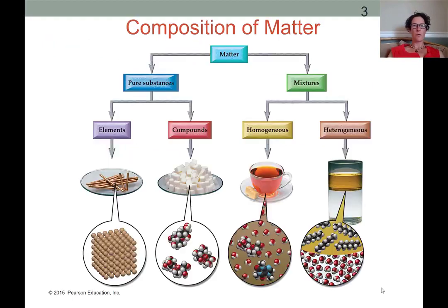So we'll start with classifying the composition of matter. Here we see a hierarchical tree describing the various types of matter by composition. The first level of separation is whether the matter is made up of one pure substance or is a mixture of multiple pure substances.